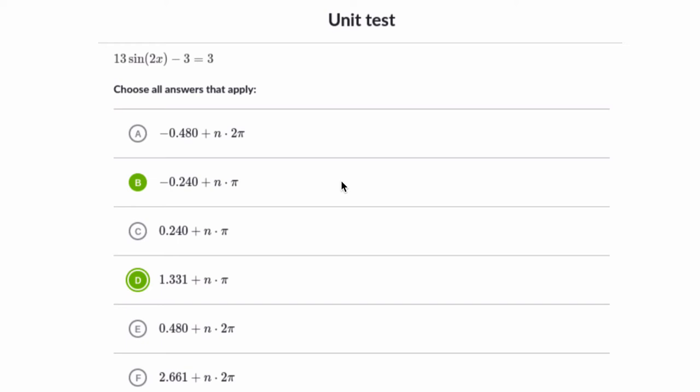Hello, a student wanted some help on this problem. It's solving for x where we have 13 times the sine of 2x minus 3 equals 3. So let's go through this. We have 13 times the sine of 2x minus 3 equals 3. So what are we trying to do? We're trying to solve for x.